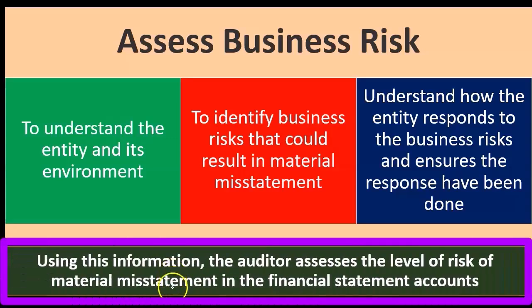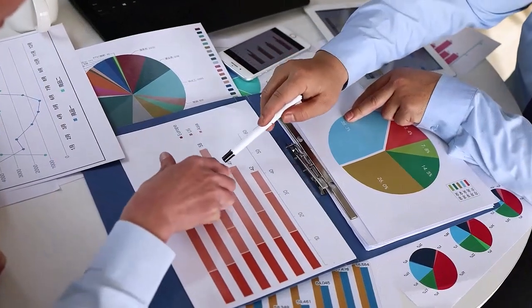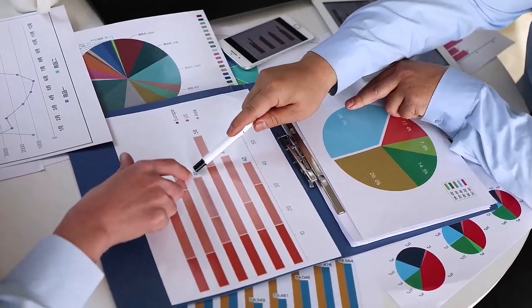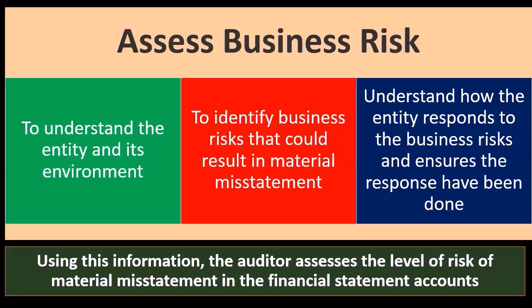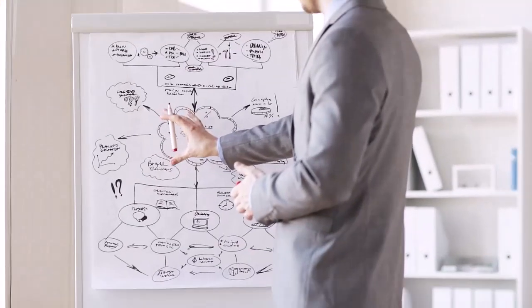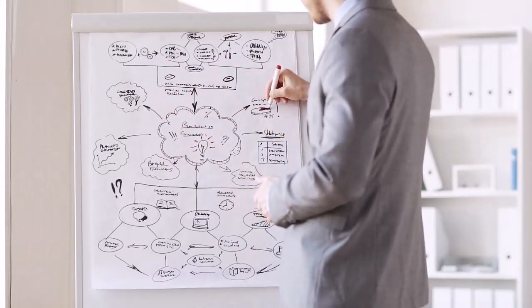Using this information, the auditor assesses the level of risk of material misstatement in the financial statement accounts. We're going to use this information to assess the level of risk of material misstatement in the financial statements, because that's our goal when we conduct the audit — to give an opinion on whether there is material misstatement. That's what we're going to be gathering evidence for, as detectives would.